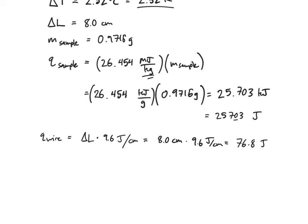Oh and I'm going to keep track of my sig figs here, not to forget. I have four sig figs in my mass, so that means that's my sig fig there, and I have two sig figs in my Q wire, so there's my sig fig right there.